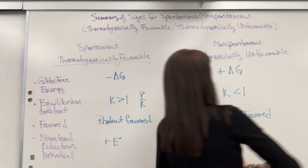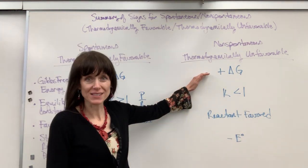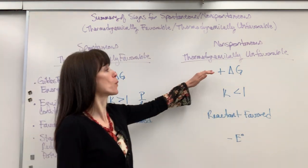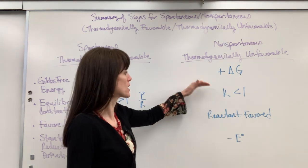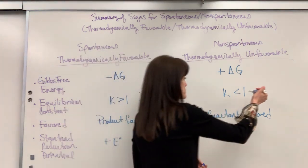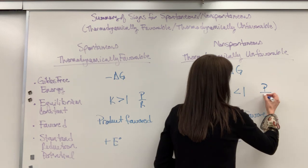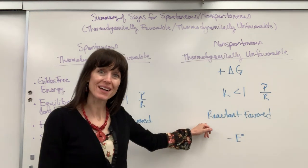And then over here, for non-spontaneous, we've got a positive delta G, so this requires energy to do work. K is less than 1 because we have more reactants. It's reactant favored.